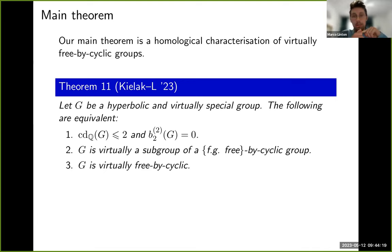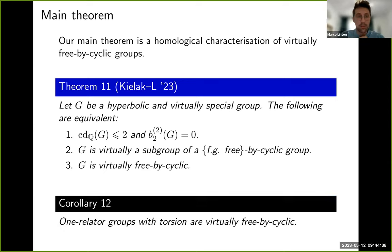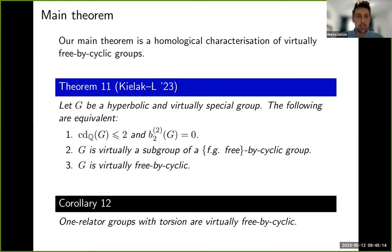They are all virtually special by Wise's results. They have rational cohomological dimension at most two — the ones with torsion are virtually torsion-free of virtual cohomological dimension two — and Dicks–Linnell showed they have vanishing second L² Betti number. So a corollary of this result is the resolution of Baumslag's virtually free bicyclic conjecture: all one-relator groups with torsion are virtually free bicyclic. More generally, this holds for any one-relator group which is hyperbolic and virtually special, for example any small cancellation one-relator group.